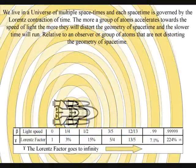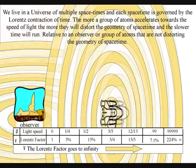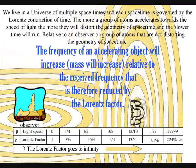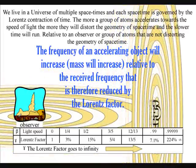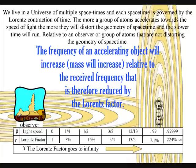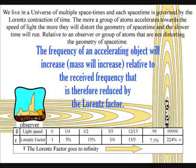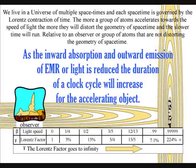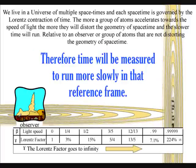We have time dilation for an object accelerating towards the speed of light, and gravitational time dilation around objects of great mass, because the greater the momentum, the shorter the wavelength and the higher the frequency. The frequency of an accelerating object will increase relative to the received frequency, that will therefore be reduced by the Lorentz factor. As the inward absorption and outward emission of electromagnetic radiation is reduced, the duration of a clock cycle will increase for the accelerating object, and time will be measured to run more slowly in that reference frame.